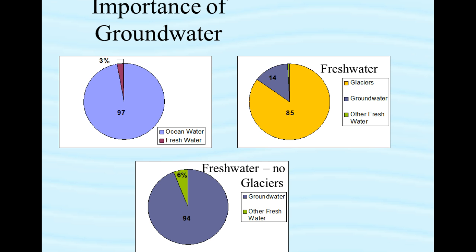Next let's look at how we use groundwater. Groundwater is used for three main things. Number one, it's used as drinking water for about 50% of the population. Number two, it accounts for about 40% of the irrigation water — the water used to water crops. And number three, it provides 25% of industry's needs. So: 50% drinking water, 40% irrigation water, and 25% for industry.